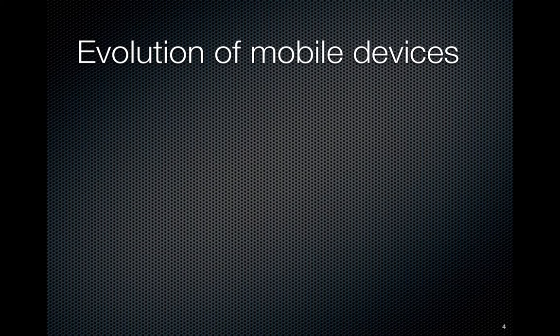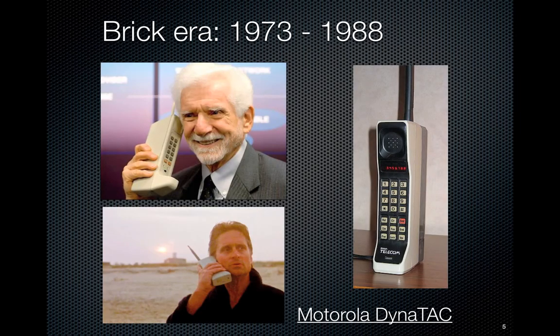Looking at the evolution of mobile devices, you could trace it as far back as you want — there were mobile devices even a hundred or more years ago. The first ones were developed by the guy who essentially founded the Ericsson company, whose idea of a mobile device was a phone you took around and connected via a wire over a telephone line. But in terms of what we consider a modern mobile device, we generally start around the early 1970s.